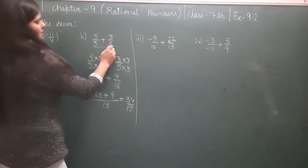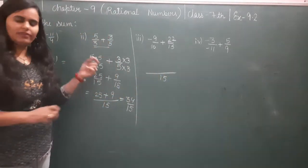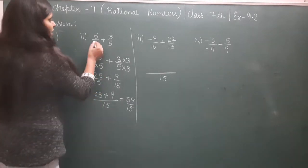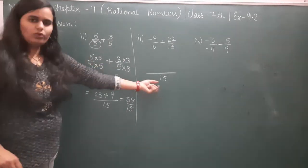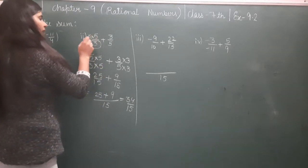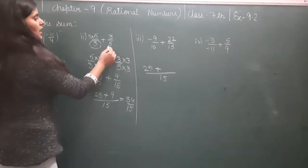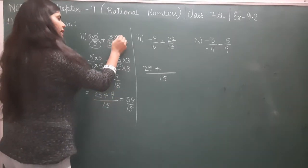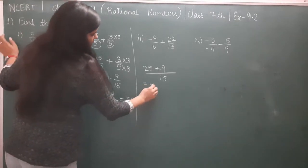In the second method, first write the LCM below, which is 15. Now divide this denominator by 5, you get 3. Multiply that 3 with the numerator to get 25. Plus sign stays plus. Now divide 15 by 5, you get 3. Multiply that 3 by the numerator which is 9. Now it becomes 34/15.